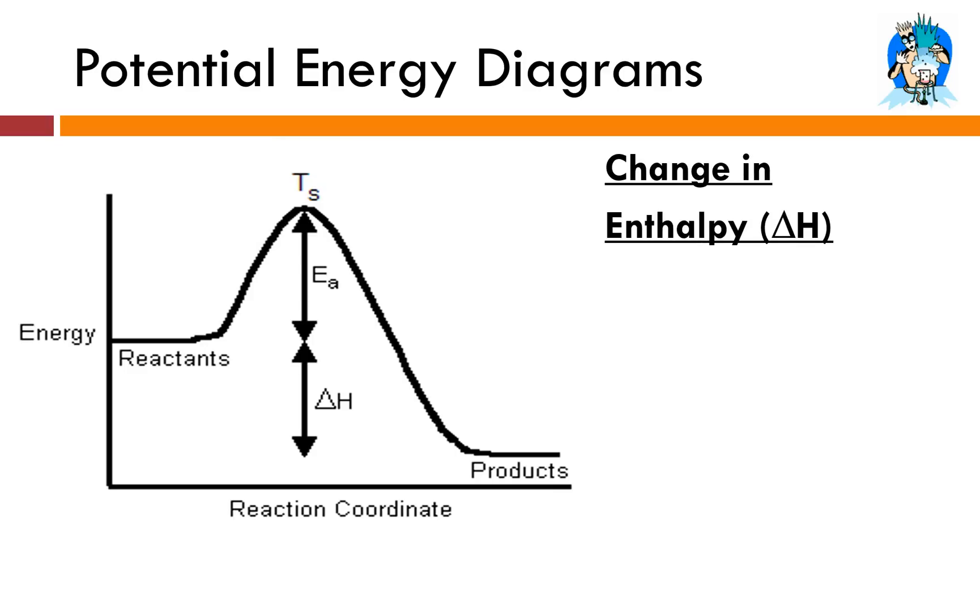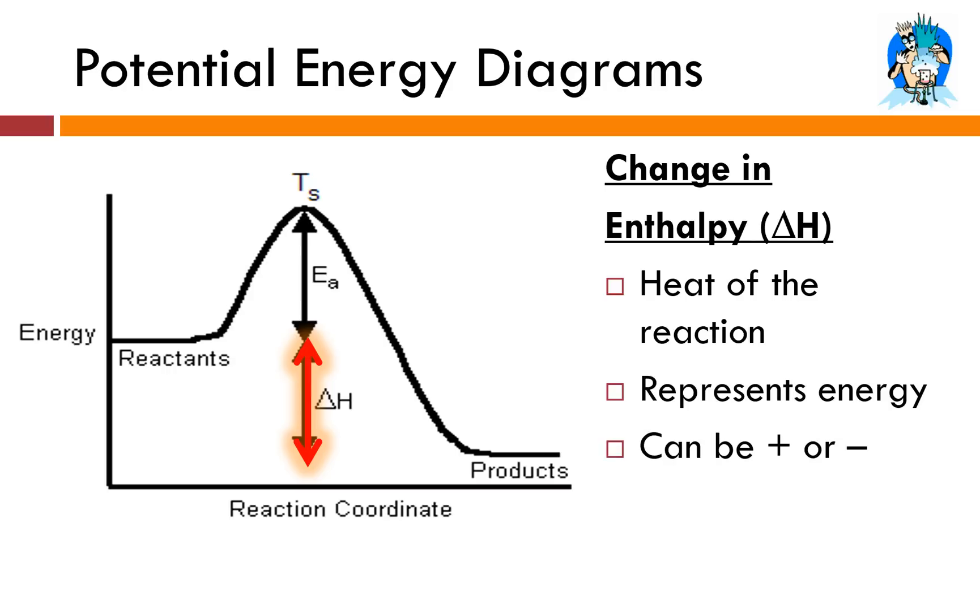Up next, we've got change in enthalpy, which is also called delta H. We'll talk more in future lessons about what enthalpy is exactly. For the time being, think about it just as energy. There's a mole component to it, but again, that's for a future lesson. Delta H is what we call the heat of the reaction. So it's the amount of energy that's either absorbed or released. Delta H can be positive or negative.